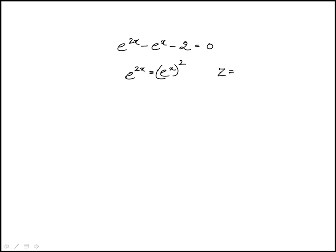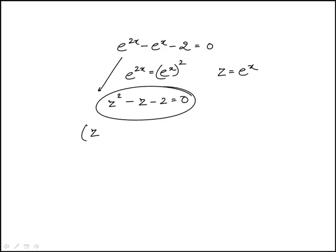So if we call z equal to e to the x, this is really z squared minus z minus 2. And this is a quadratic that we can factor. So this would be z minus 2 times z plus 1 equals 0.